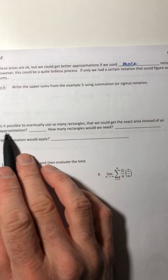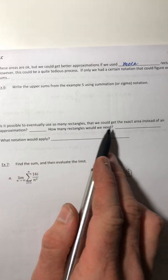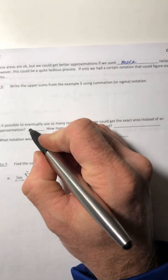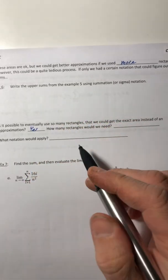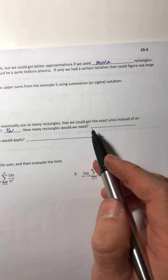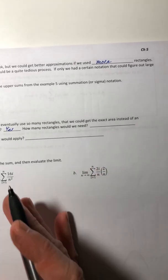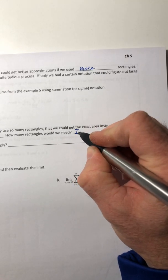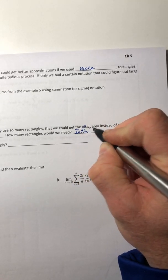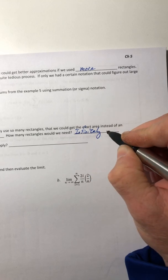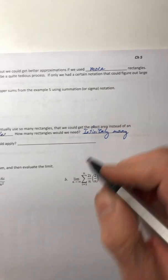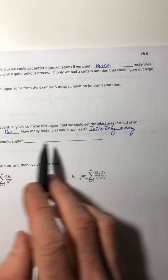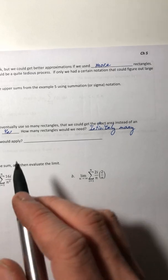Okay. So is it possible to eventually use so many rectangles that we can get the exact area instead of an approximation? Well, the answer is actually yes. So how many rectangles would we need? So if we start cramming more and more in there, we are going to need infinitely many. We have to smash an infinite amount of rectangles in there.